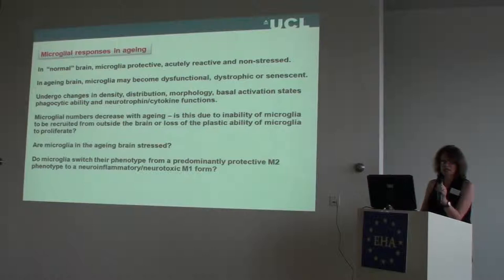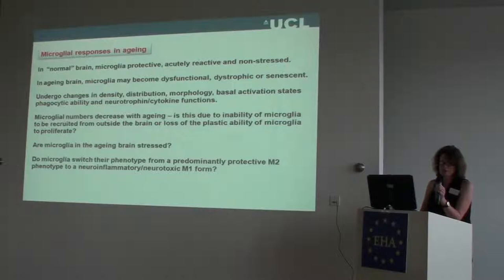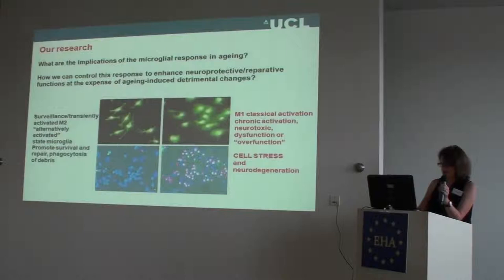We noticed quite a few years ago that when you activate microglia, they get a stress phenotype. It's interesting to find out whether, in ageing, they are stressed. There's interesting data coming out now that they do change their morphology and their phenotype. So we want to find out whether they switch from this protective phenotype — predominantly the M2 phenotype — to this inflammatory, toxic phenotype.